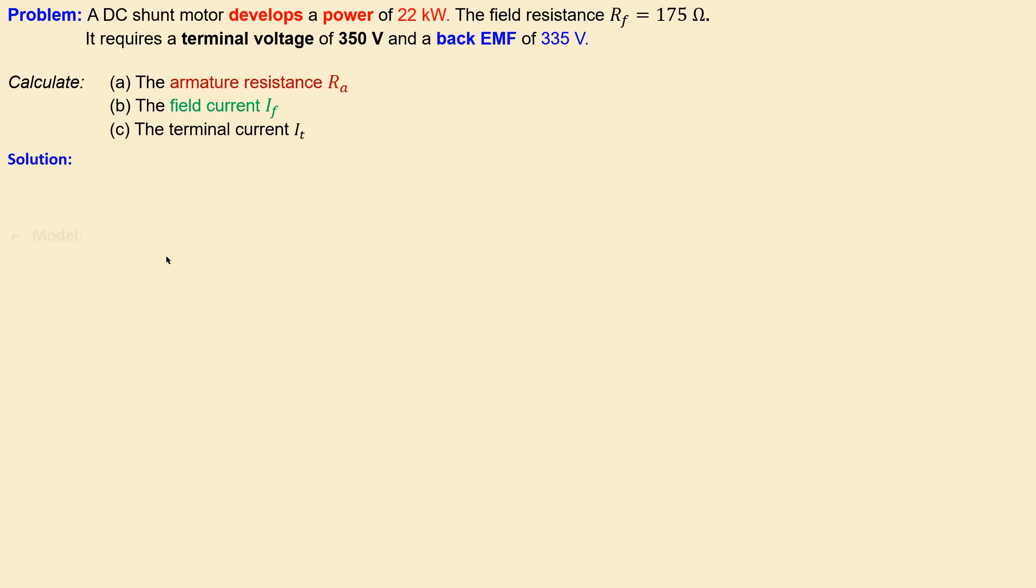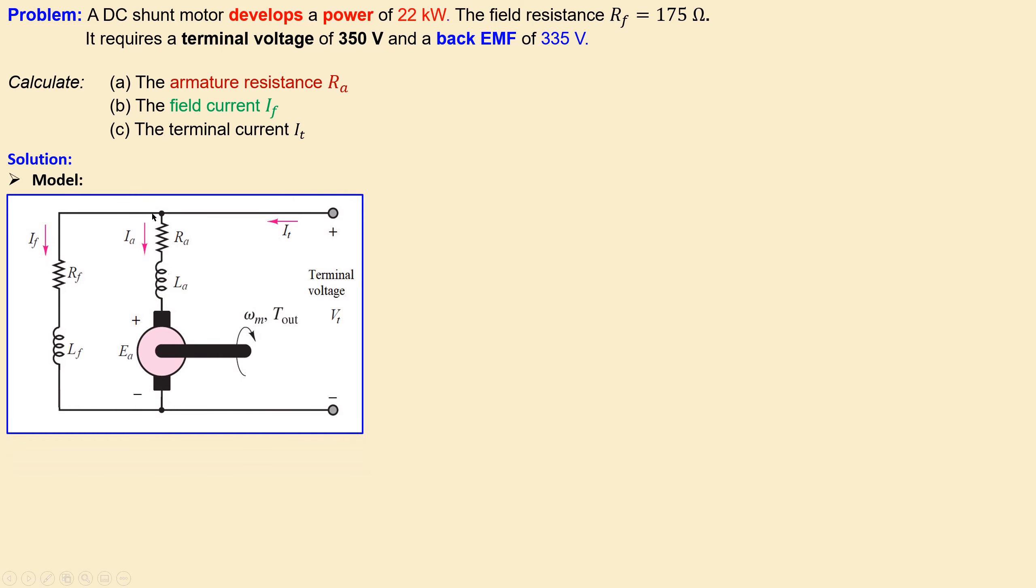Let's look at our solutions and again we begin with the model of this DC shunt motor. This is the model we already discussed in the previous two examples. This is the field part. This is the armature part also including the back EMF part and this is the terminal voltage and this is the terminal current. This is the armature current and this is the field current. So actually all of the necessary elements are in this model.